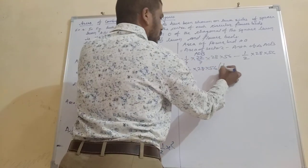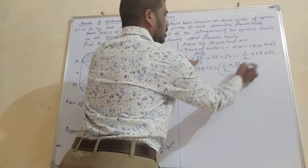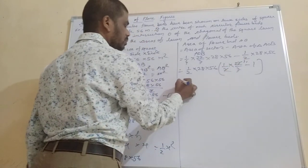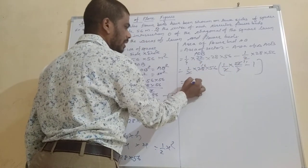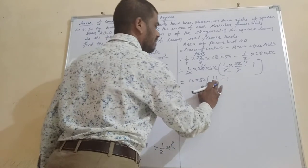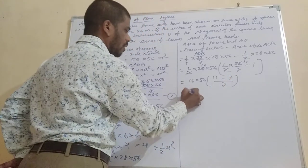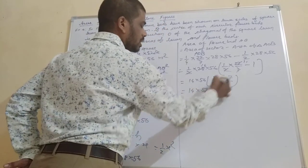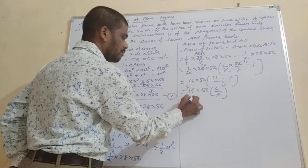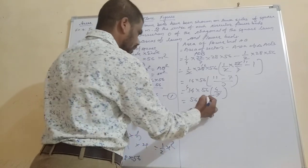We get ½ × 28 × 56 × (11/7 − 1). Now 1 = 7/7, so 11/7 − 7/7 = 4/7. We have 14 × 56 × (4/7). Since 7 goes into 28 giving 4: 14 × 56 × 4/7 = 56 × 16. So the area of one flower bed is 56 × 16 meter square.